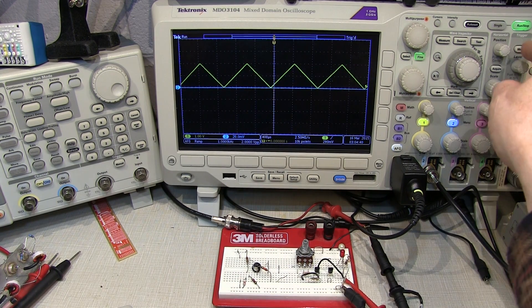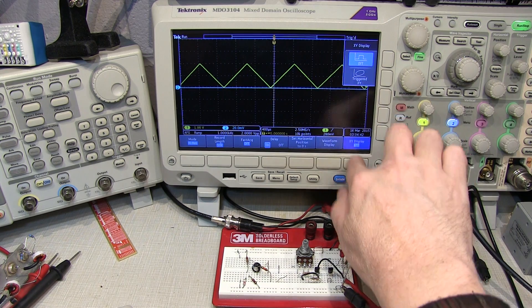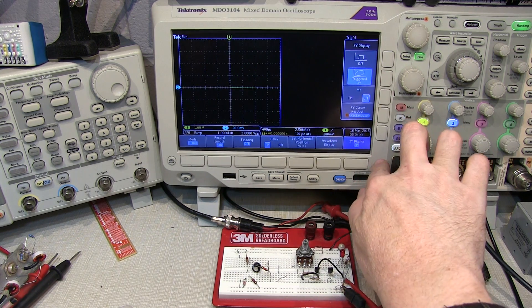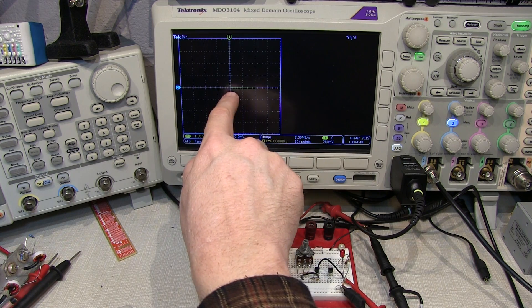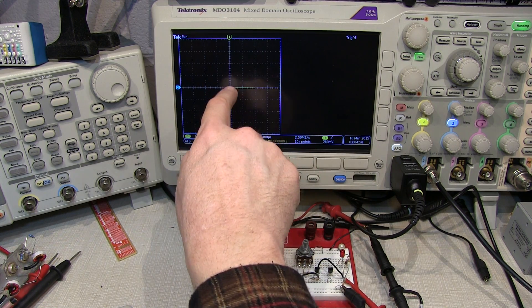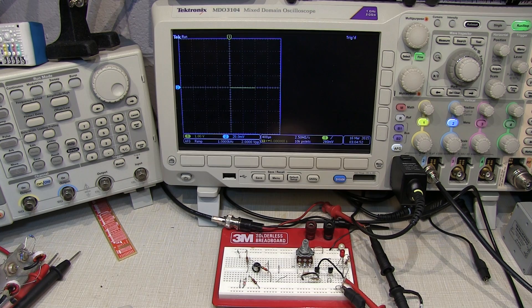We can put the scope into XY mode to show essentially what the curve tracer would show, and I can see just a flat line here because I'm applying a voltage and there's no current going because I'm not going through a device.